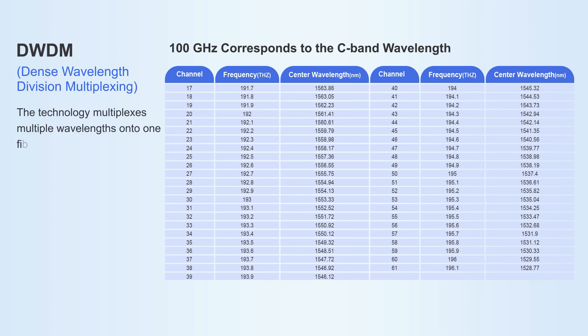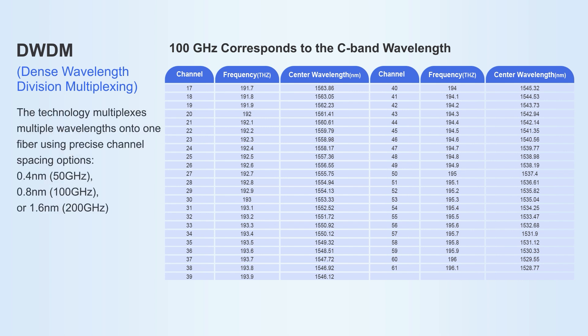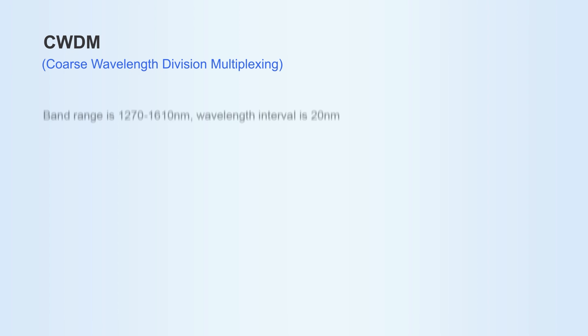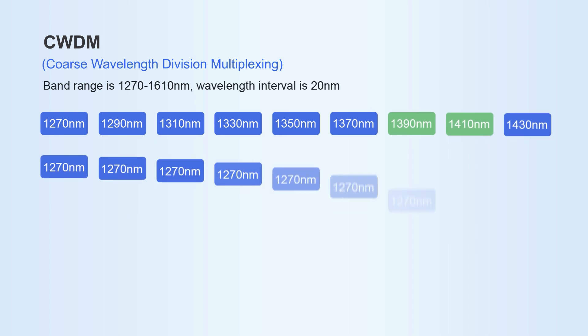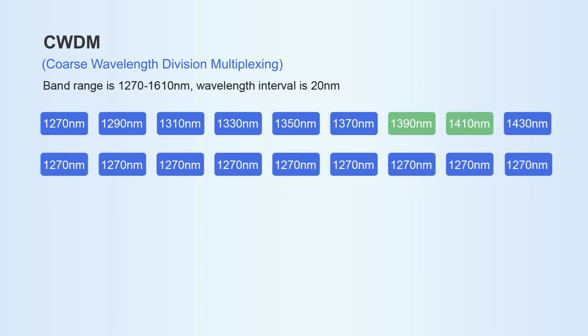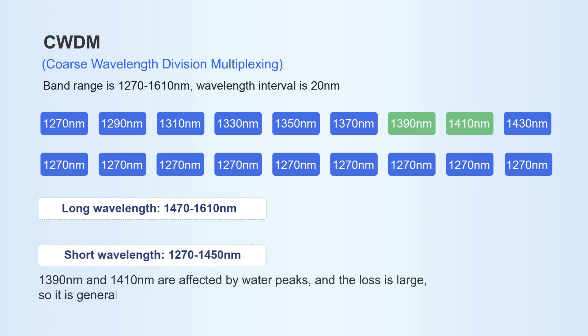There's also DWDM and CWDM — two key fiber optic technologies. DWDM, dense wavelength division multiplexing, packs many signals into a single fiber with tight wavelength spacing, such as 0.4 nm, 0.8 nm, and 1.6 nm. CWDM, coarse wavelength division multiplexing, uses wider wavelength spacing, typically 20 nm, to multiplex optical signals, supporting fewer channels. The standard defines 18 wavelengths covering the 1270 to 1610 nm range.